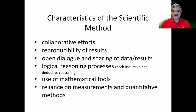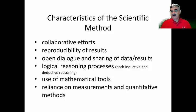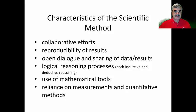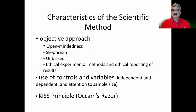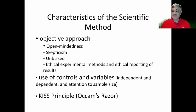Another characteristic of science is an open dialogue and the sharing of data and results. Scientists often go to scientific meetings, give papers, and share their results as a way of verifying and testing data. Science is also characterized by the use of logical reasoning processes — both inductive and deductive logic — the use of mathematical tools, and the reliance on quantitative measurements. In addition, the scientific method is an objective approach to understanding natural phenomena. Scientists must be open-minded but also have a healthy dose of skepticism, making sure they can trust results. They are oftentimes skeptical of not only their own results but results produced by others, and this skepticism can be very healthy in the way science is done.